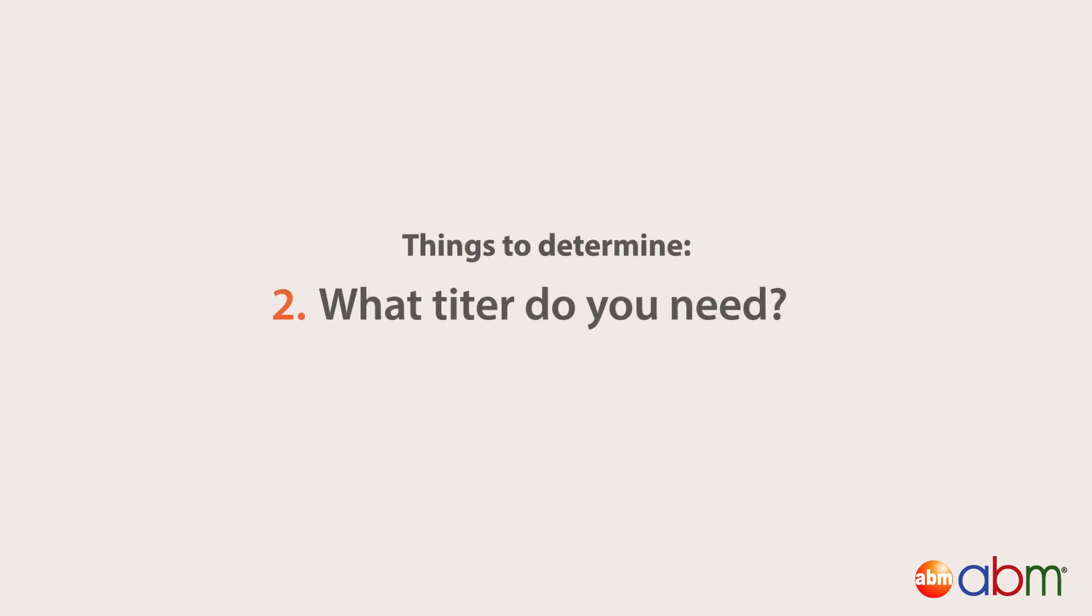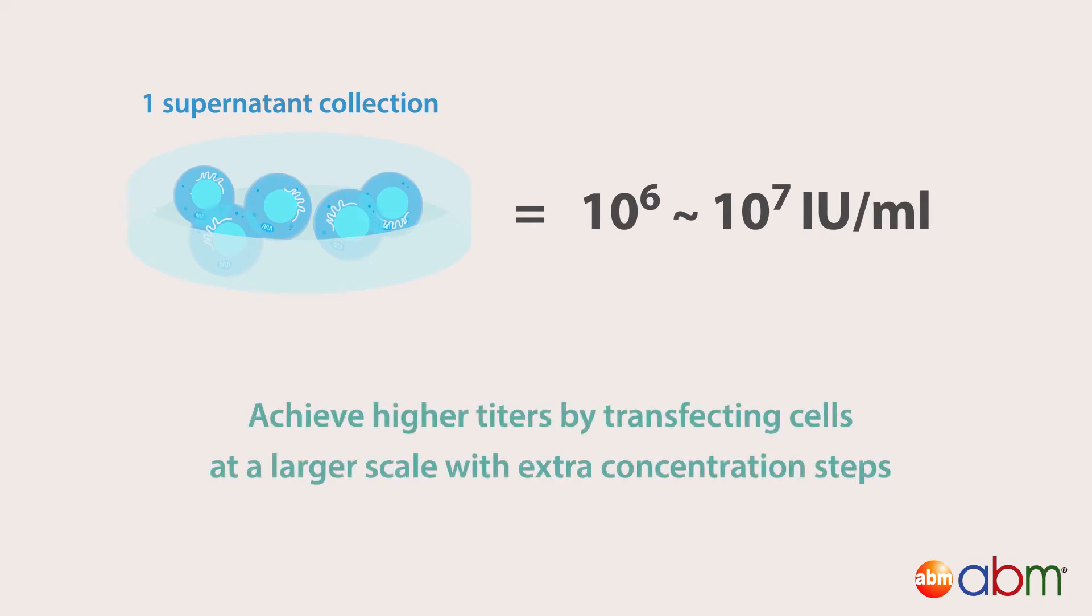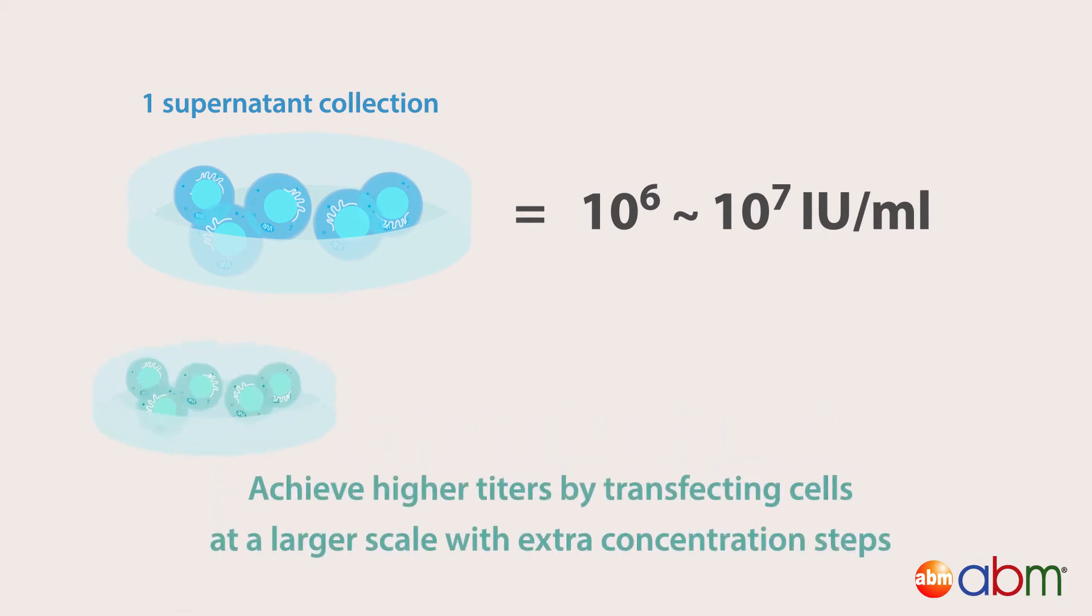Second, what titer you need. One supernatant collection will produce a titer of 10 to the 6 to 10 to the 7 infectious units per milliliter. You can achieve higher titers by transfecting cells at a larger scale with extra concentration steps.